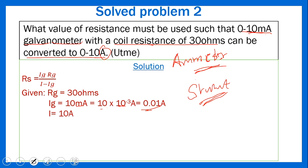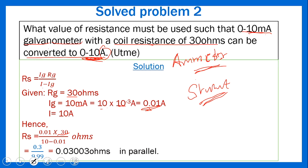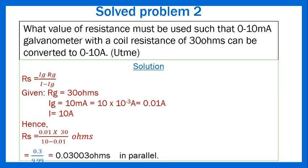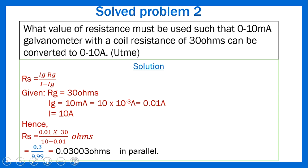Simplifying: numerator = 0.01 × 30 = 0.3; denominator = 10 − 0.01 = 9.99. Dividing: RS = 0.3 / 9.99 ≈ 0.030 ohms in parallel. Remember to always indicate whether the result is in series or in parallel.